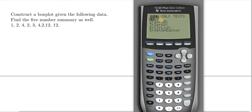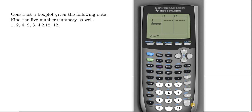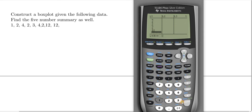Then you want to go into where it says Edit, so go ahead and press Enter on the Edit button. Now just type the data in: 1, enter, 2, enter, 4, enter, 2, enter, 3, enter, 4, enter, 2, enter, 12, and then 12. You have to press Enter after you press each number. So you type in all of the numbers.